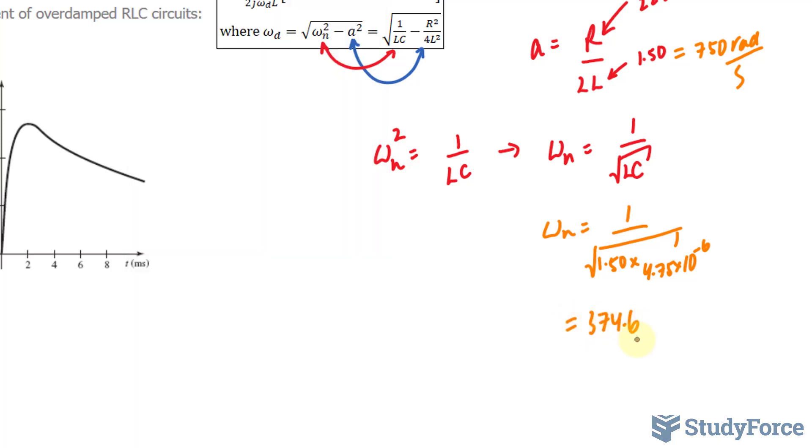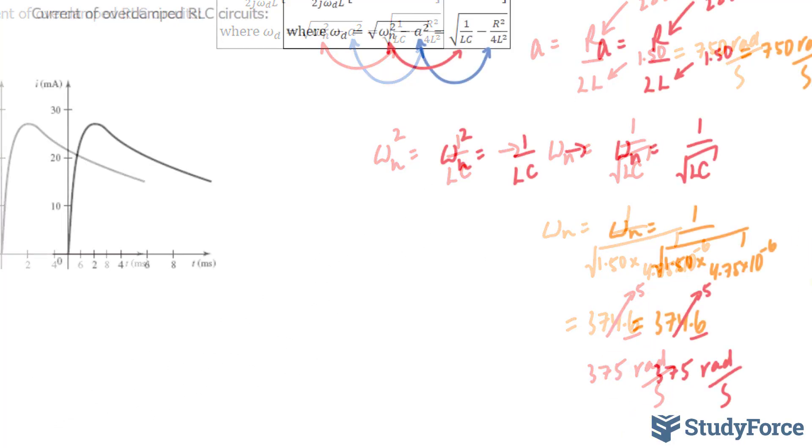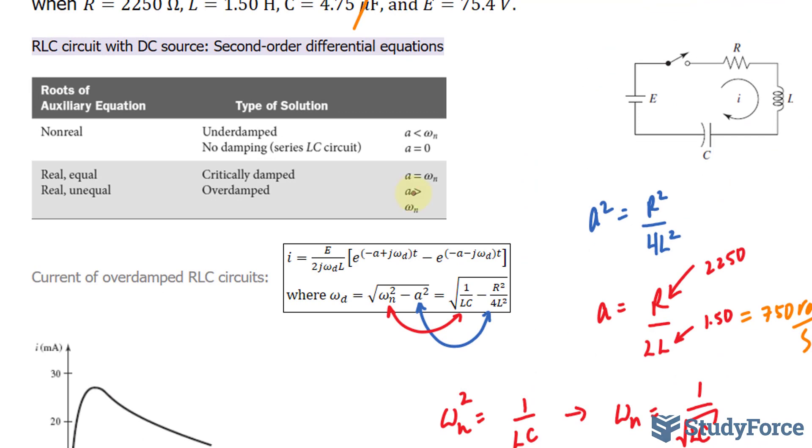374.6. And, just to respect the number of significant figures, we'll make that into a 5 and we'll discard that 6. So, we have 375 radians per second. Notice that A is larger than omega n. And, if A is larger than omega n, we have an overdamped situation.